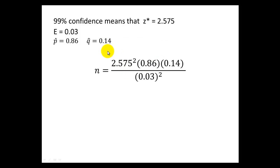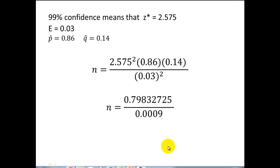So if we plug these values above into our sample size calculation formula, don't forget to square z star and E. Intermediate step here you can try with your calculator, see if you get the same thing. So the value we discover for n is 887.03 households.